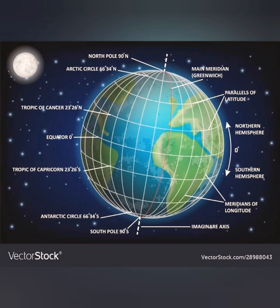Why does the temperature decrease? At the equator, the sun's rays directly fall at 90 degrees. As we travel towards the north pole and the south pole, the angle keeps on decreasing and the rays become slanting.